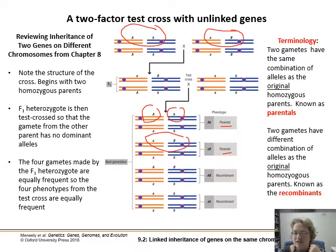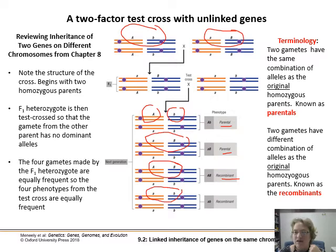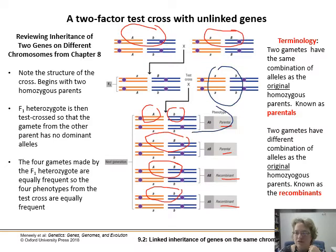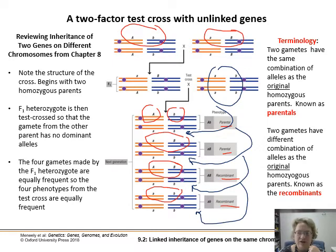Down here, where we have big A, big B — that's not something we saw in the original cross — that's called a recombinant. Same with little a, little b — that's not in the parents either, and that's a recombinant. Why am I just circling the top ones? Because that's the gamete from this parent here. You can see we're always getting a pair of recessives from that parent, but we want to notice what's happening with the set of genes that came from the red one over here — how did these sort out and become different?